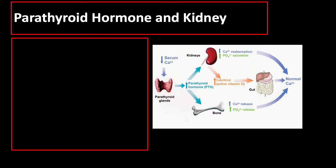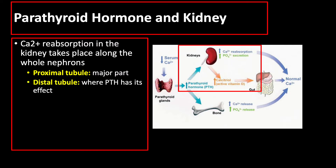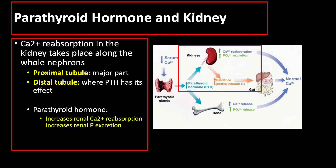Let us talk about the interaction between the parathyroid hormone and the kidneys. Calcium reabsorption in the kidney takes place along the whole nephron. The proximal tubule is the major part of the nephron that reabsorbs calcium, while the distal tubule is the part where parathyroid hormone has its effect. In the kidney, the parathyroid hormone increases renal calcium reabsorption, increases renal phosphorus excretion, and converts vitamin D to its active form.